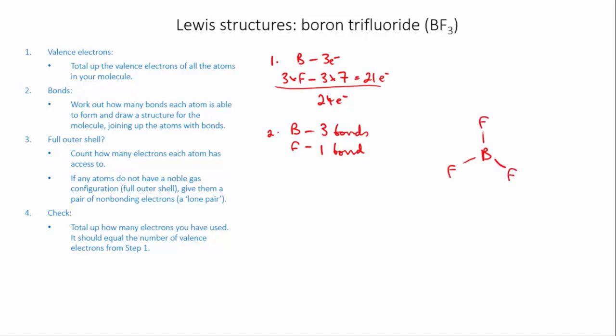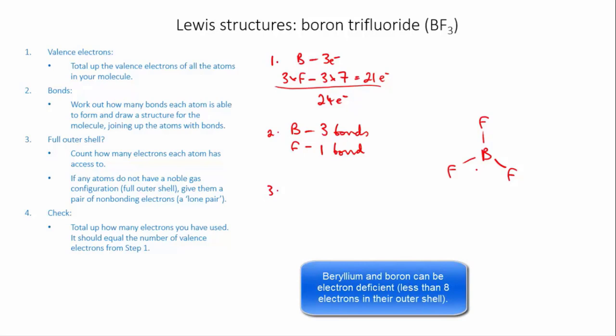Now I'm going to check for full outer shells. Boron has access to six electrons. Remember boron is one of the electron deficient exceptions, so it's happy with six. We don't need to give it any more.